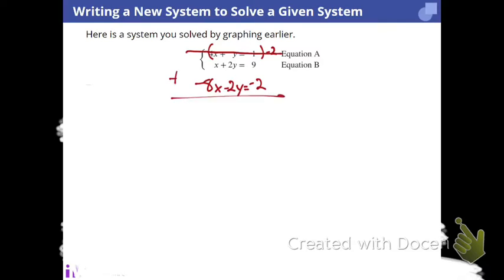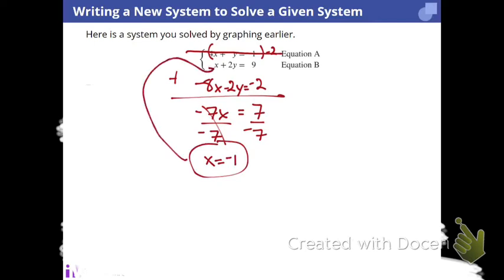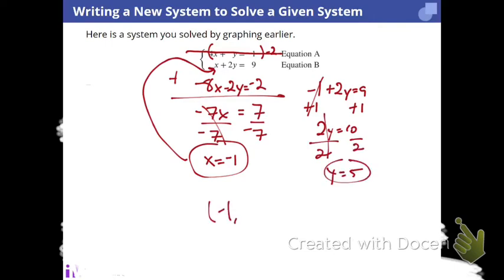Then I'm going to add these together. So, x and negative 8x is negative 7x. Because I did this with intention, my y's cancel, and I'm left with a 7. So, what does x have to equal? x has to equal negative 1. And then I can put this in any equation. I'm going to choose to put it right there. Negative 1 plus 2y equals 9, which means y has to equal 5. And this is not my answer. My answer is the ordered pair. Negative 1, 5. Because the answer is the point in which these two lines cross.